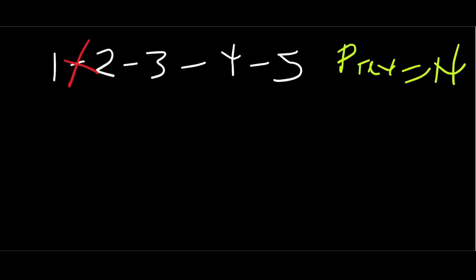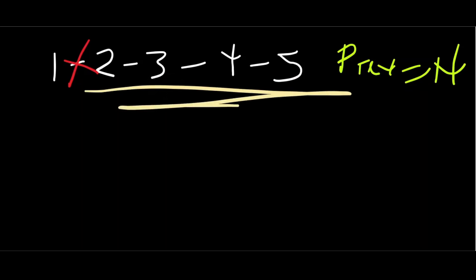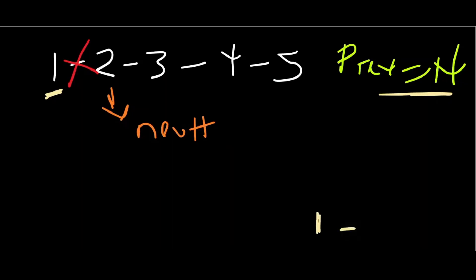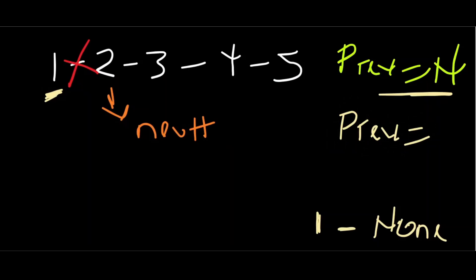So we have to store the next in a separate pointer — let's call it 'nxt'. We've already changed the pointer of one, so its next is no longer its current next but is what we have in previous. Effectively, one is now pointing to the previous, which is none. After this is done, we update the value of previous — previous is no longer none because we now have a new previous which is one. Now we traverse over to our stored nxt value.